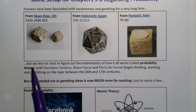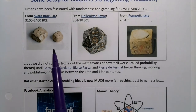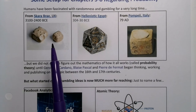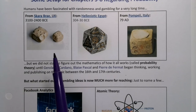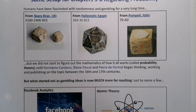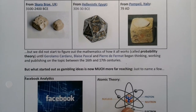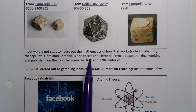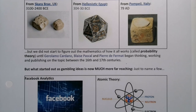We did not figure out the math of how it all works until much later. We've been playing with dice from 3100 BCE, if not earlier — there are bone dice that predate this — but we didn't understand the math of probability until these three gentlemen began working and publishing on the topic between the 16th and 17th centuries: Gerolamo Cardano, Blaise Pascal, and Pierre de Fermat. Their work on probability theory was very groundbreaking and original.